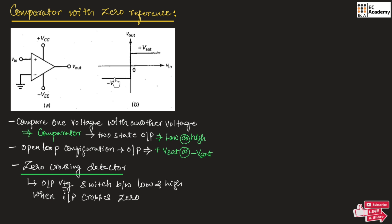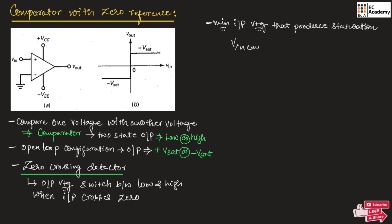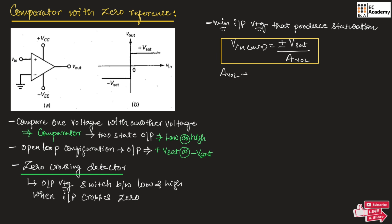So, when the input is negative the output will be minus V-saturation, and when the input is positive the output will switch to plus V-saturation exactly at the zero reference. This is how the comparator works. Here on the x-axis, the minimum input voltage that produces saturation is given as: V_in(minimum) = ±V-saturation divided by Avol, where Avol is the open-loop voltage gain.